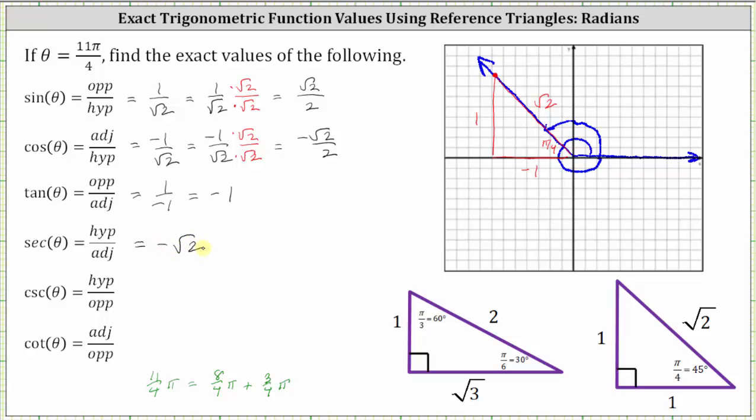The cosecant function value is equal to the reciprocal of the sine function value. The reciprocal of one divided by square root two is square root two divided by one, or just square root two.